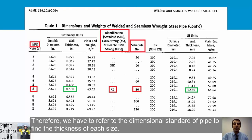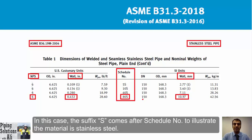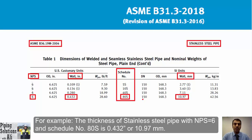For stainless steel pipe, we refer to ASME B36.19. In this case, the suffix 'S' is added after the schedule number to indicate stainless steel material. For example, the thickness of a stainless steel pipe NPS 6, Schedule 40S is 0.432 inches (10.97 mm). The range of thicknesses available for stainless steel pipes is more limited.